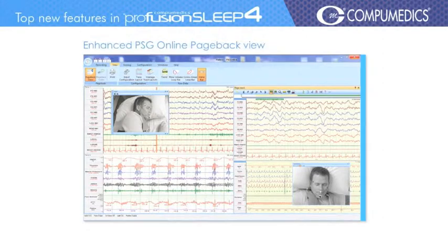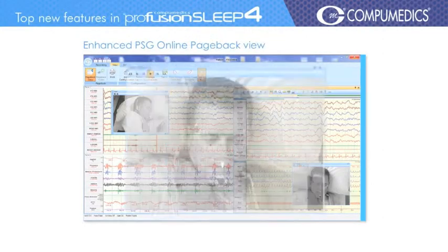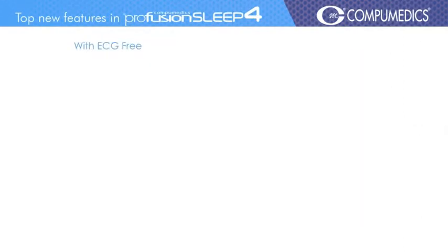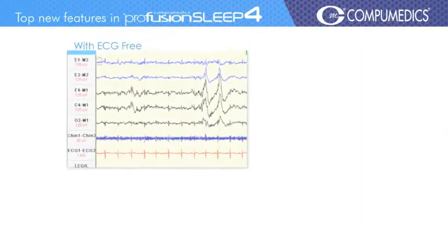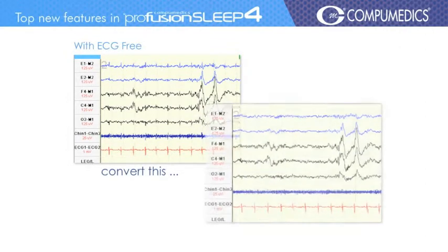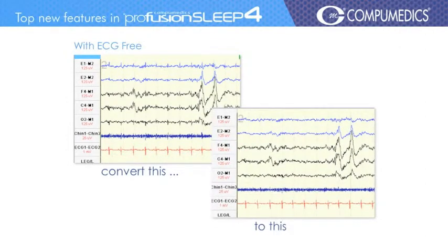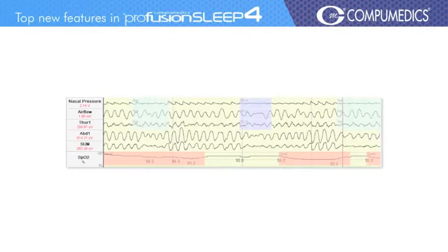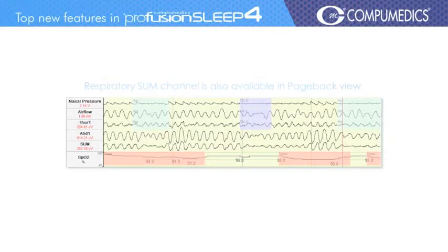Profusion Sleep 4 has an enhanced PSG online pageback view with video review and ECG free trace transformation, which allows you to score during pageback without ECG artefact. The respiratory sum channel is also available in pageback view.